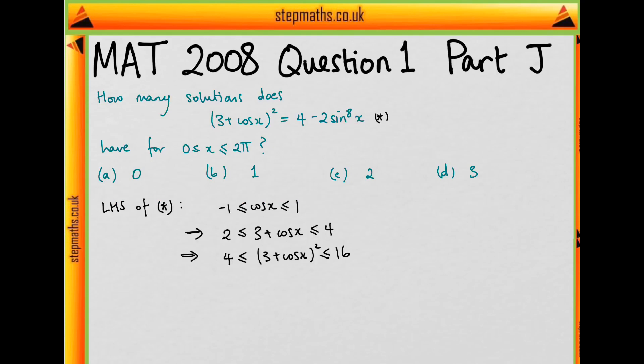For the left-hand side, because we know cos x is between -1 and 1, (3 + cos²x)⁸ is going to be between 4 and 16.